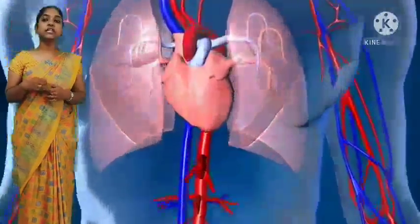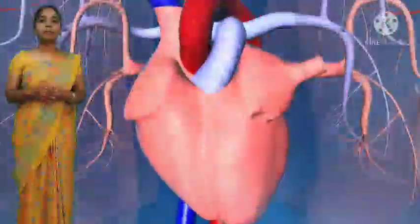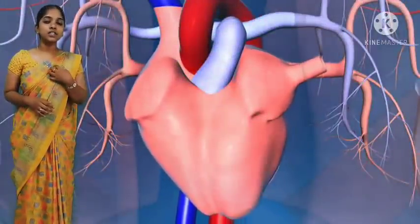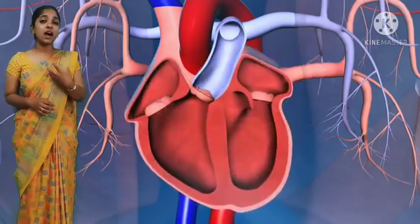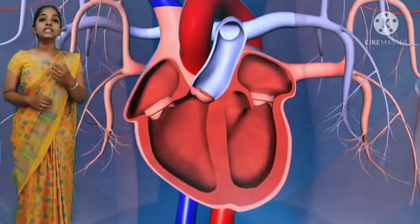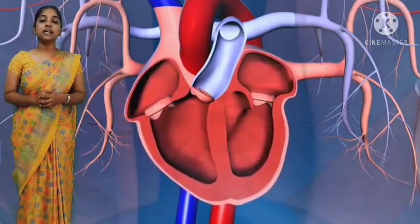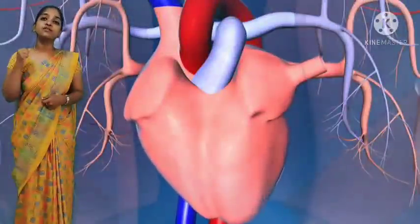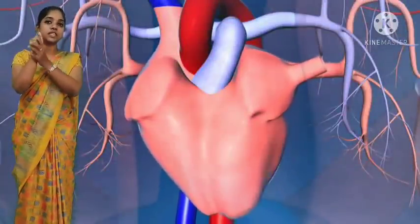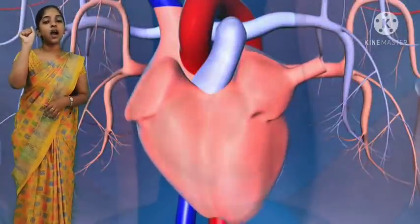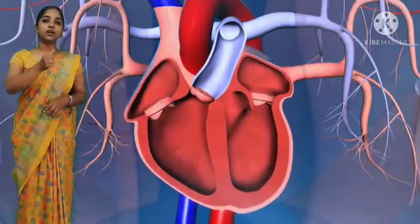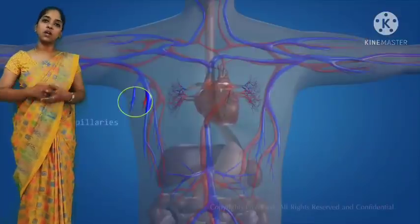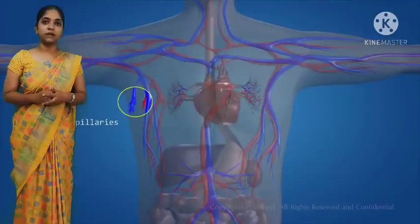The size of a person's heart is about the size of their fist — only this much size our heart will be. Blood vessels are thin tubes which start from the heart.